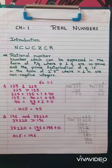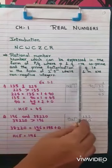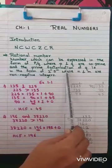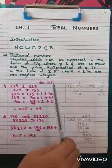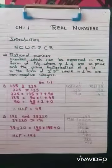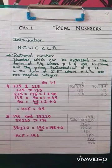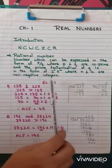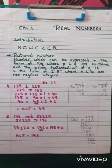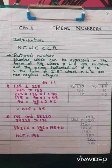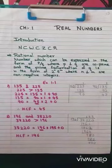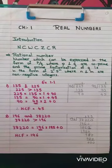Today we are going to learn about rational numbers. Rational numbers means numbers which can be expressed in the form of P by Q, where P and Q are co-prime and the prime factorization of Q is in the form of 2 raised to N multiplied by 5 raised to M, where N and M are non-negative integers. For example, 2 upon 3 — here 2 and 3 are co-prime numbers. The denominator should be in the form of 2, 5, or a combination of 2 and 5.